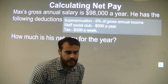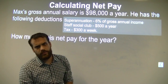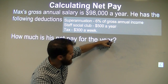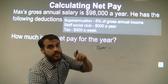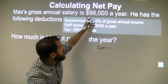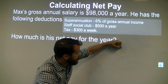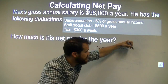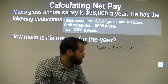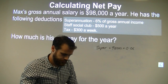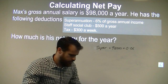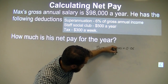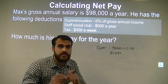Let's deal with the most complicated one first — the superannuation. The super is equal to 6% of his annual income. His annual income is $98,000, and the super is 6%. So if we do 98,000 times 0.06, we can find out how much super he's paying per year. That gives us $5,880 — so that's going to be his super deduction.